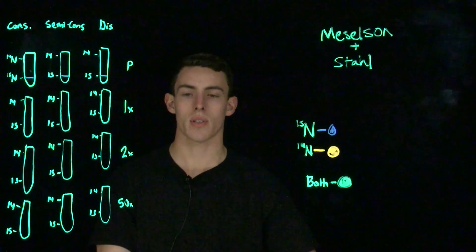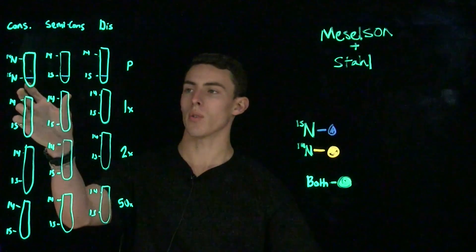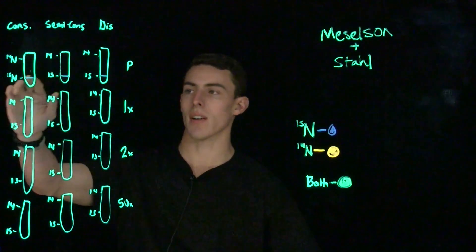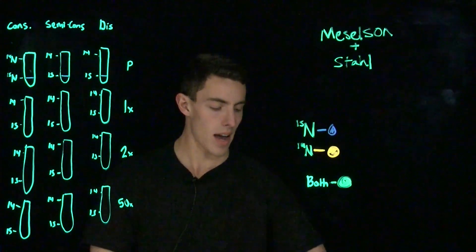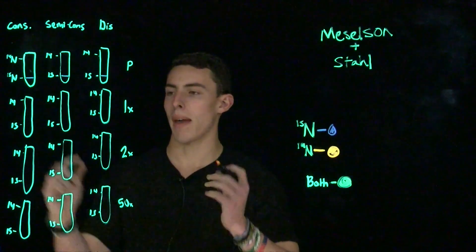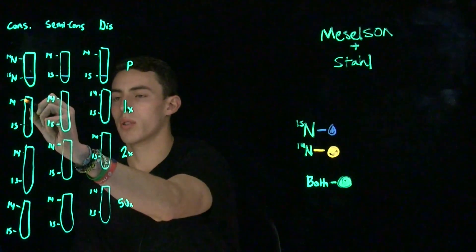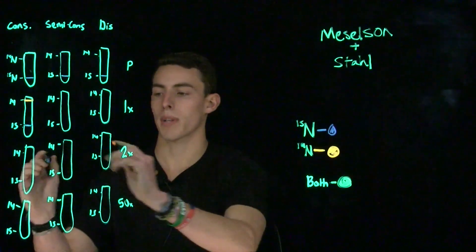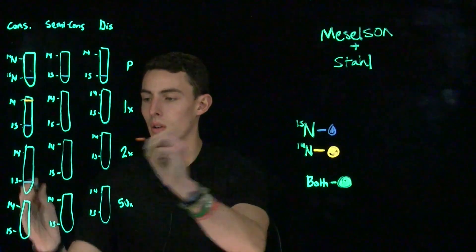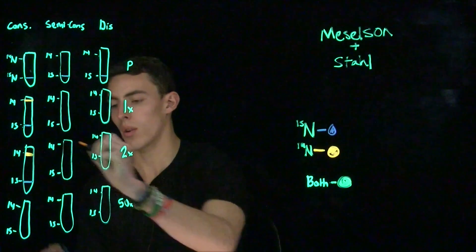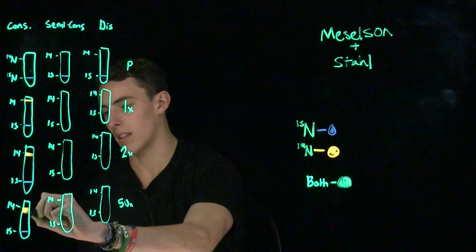Let's first look at the theorized version of conservative replication in the Meselson-Stahl experiment. The original parental strand of DNA would have been sitting at the 15N level when centrifuged. However, after a single replication, we would see a band form at 15N as before, but also another band up at 14N. After subsequent replications, we would see roughly the same pattern, with the only difference being that the original band would be significantly less thick.